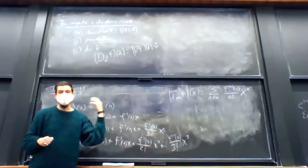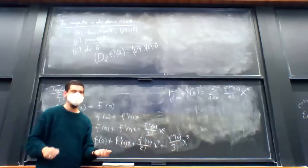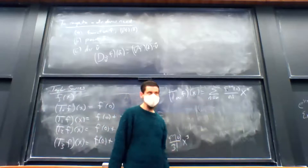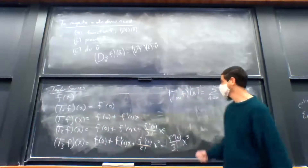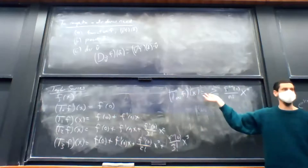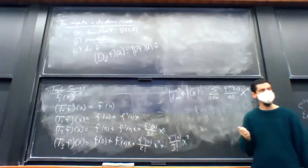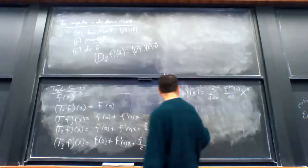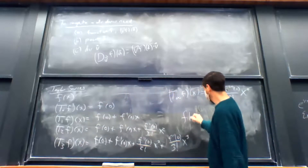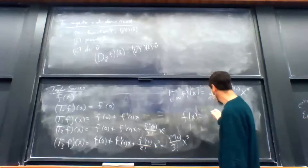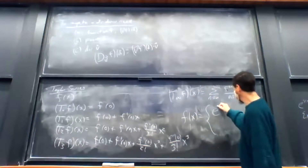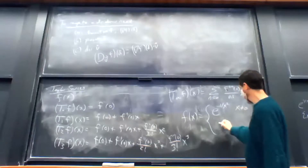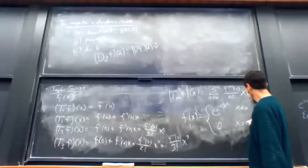Whenever we write something like this down, you have lots of questions. The first question is: does the series converge? Next: if it converges, does it converge to the original function? And for what values of x does it converge? Now I'm going to give you one of the worst functions in all of mathematics: f(x) = e^(−1/x²) if x ≠ 0, and 0 if x = 0.